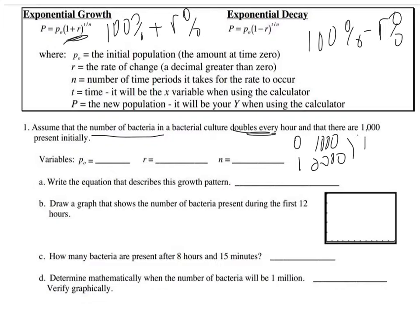What's two thousand — the new minus the old value — divided by the old value? That percentage change we were working on earlier: that's one thousand divided by one thousand, which is one, or a hundred percent. So our R is one. The rate of change as a decimal greater than zero, so we write it as one.